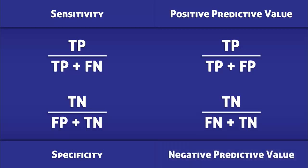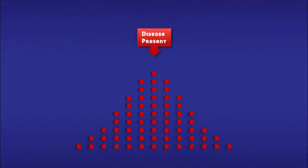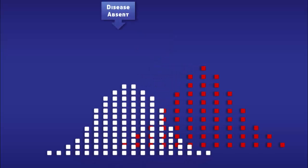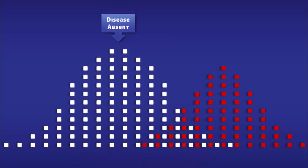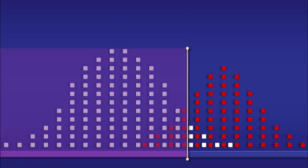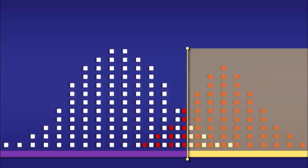In order to help us compare these equations, we are going to imagine that a group of people are being tested for a disease. These red squares represent people who have the disease, and these white squares represent people who don't. This yellow line represents a cutoff level for a test. To the left of the line, the tests return negative, and to the right, the tests return positive.